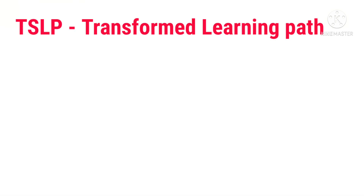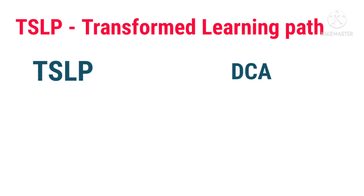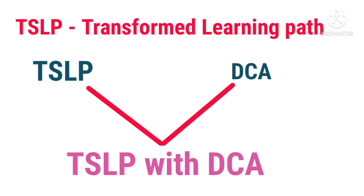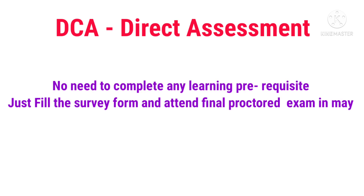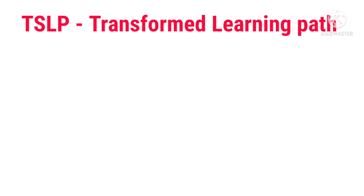I will explain the total Wings concept. First, what is TSLP? TSLP means Transformed Learning Path. Before, TSLP was separate and DCA was separate, but now they have mixed both TSLP and DCA and called it TSLP with DCA. DCA means Direct Assessment — it does not contain any learning path. We just fill the survey form, choose one technology we are comfortable with, fill the survey form, and directly in the May cycle we write the exam.